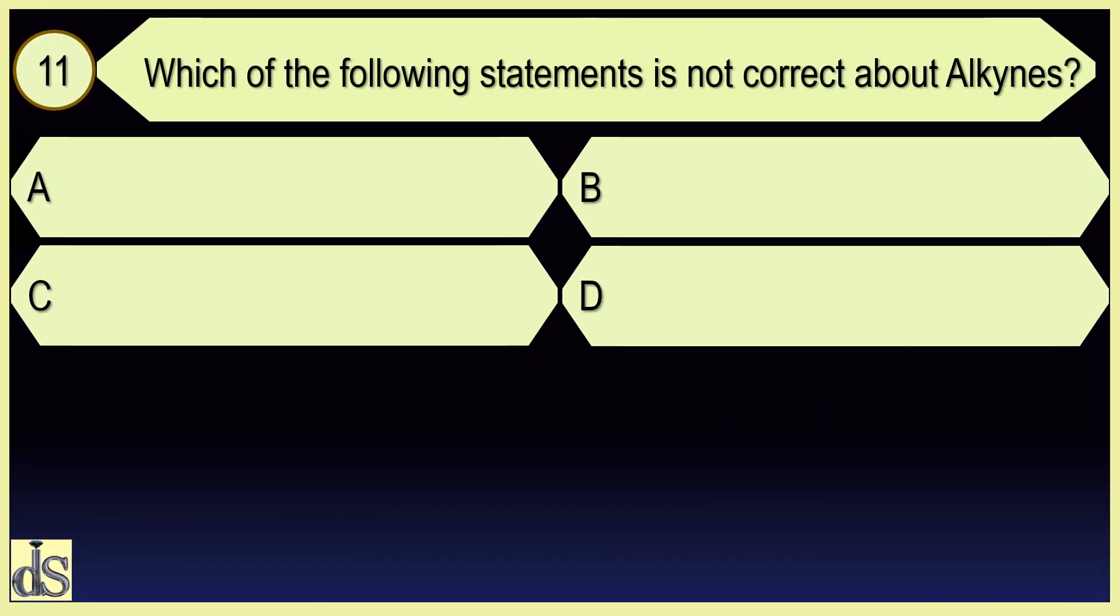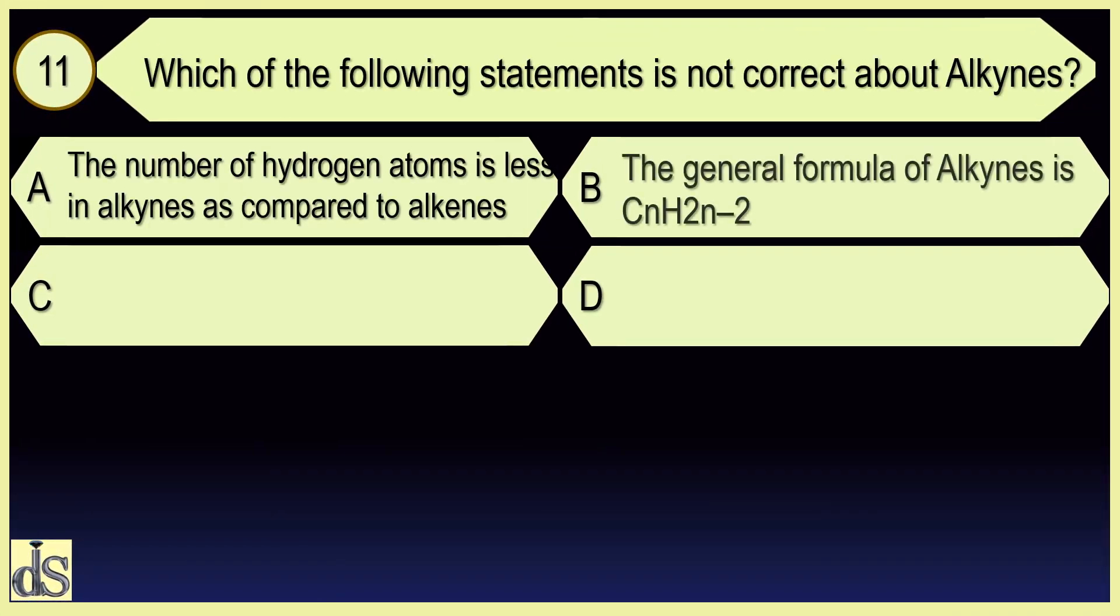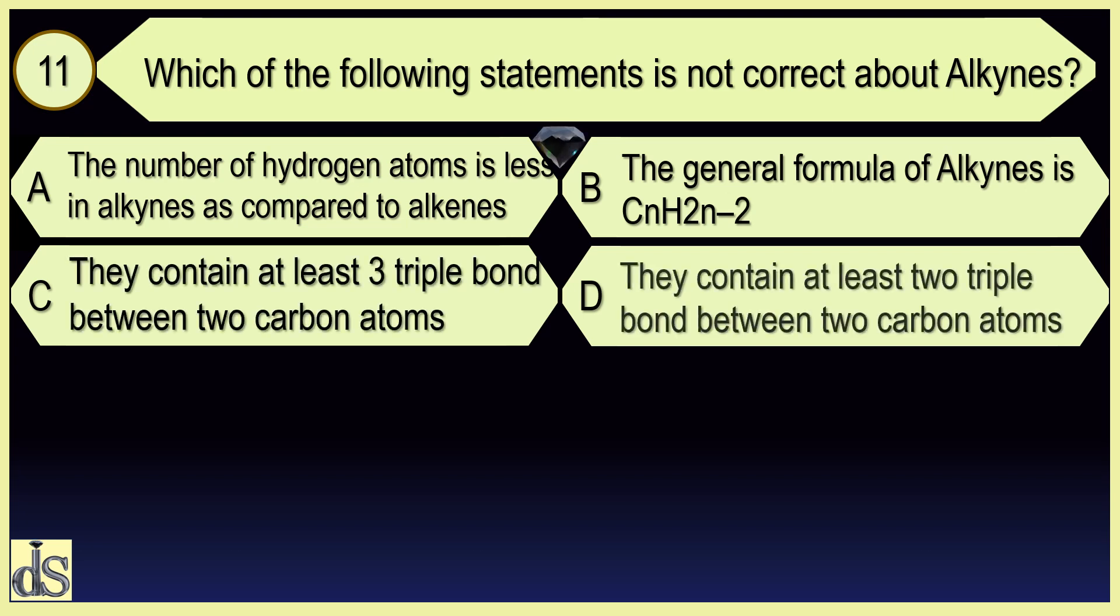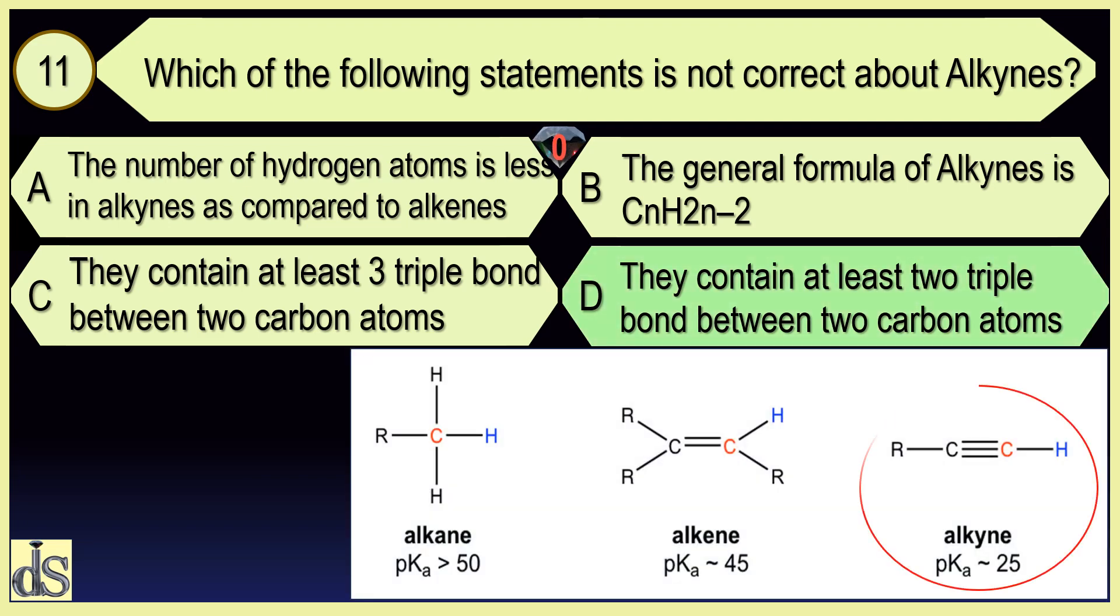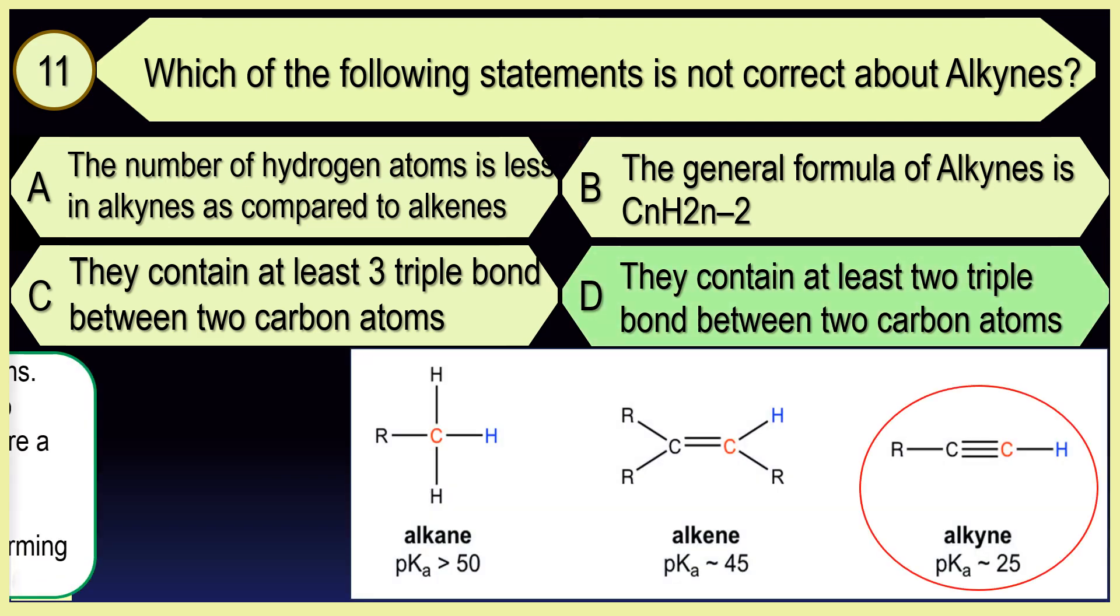Which of the following statements is not correct about alkynes? They contain at least two triple bonds between two carbon atoms.